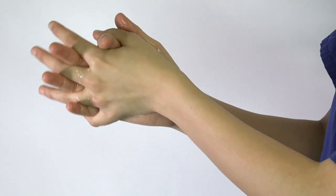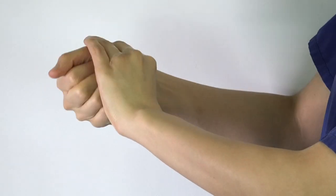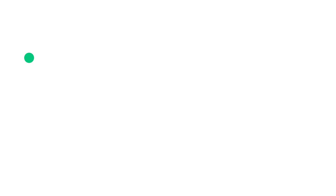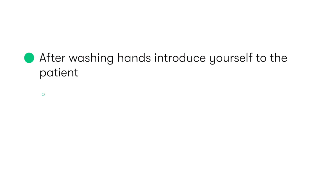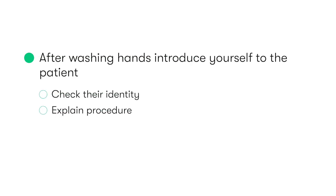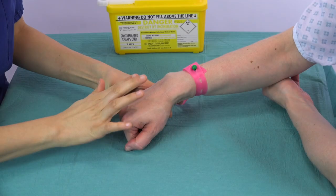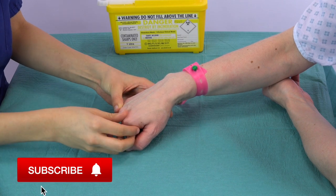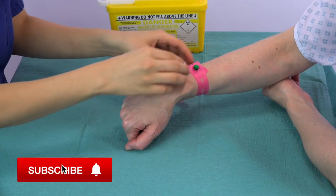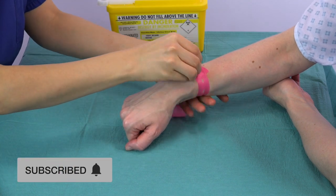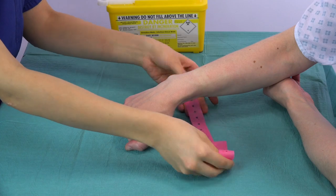After washing our hands, we start by introducing ourselves, checking the patient's identity, explaining the procedure, and then obtaining their consent. We make sure the patient is in a comfortable position, and that their arm is well supported at a height that is easy for us to access.